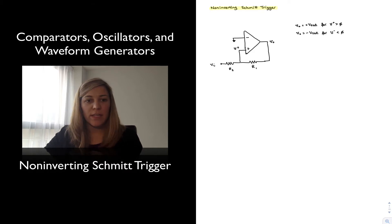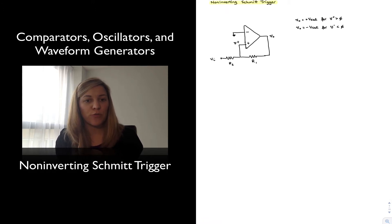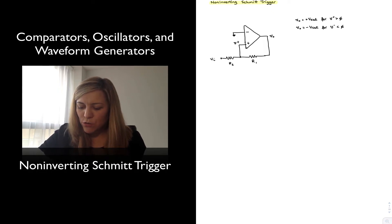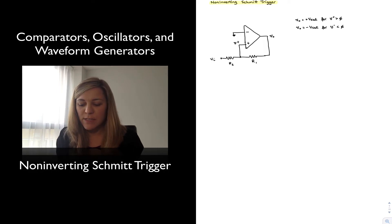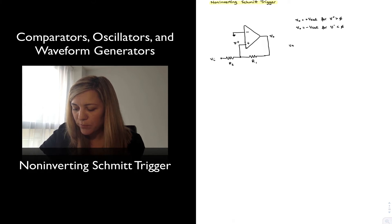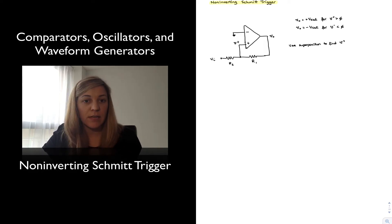Now we want to figure out the transition point — the value of Vin that is going to turn the output voltage from low to high or high to low. We know it's going to be whatever value of Vin causes Vplus to be greater than or lower than zero. So we can use superposition to figure out the value of Vplus in terms of Vin and Vout, since both Vin and Vout have connections to Vplus.